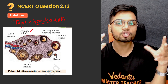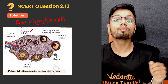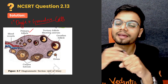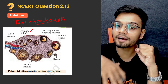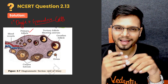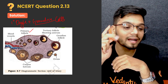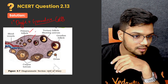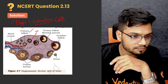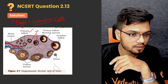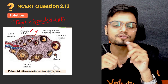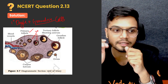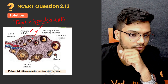Now this primary follicle starts to accumulate more layers of granulosa cells. If a primary follicle accumulates or gets covered by more granulosa cells, it transforms into a secondary follicle. This right here is a secondary follicle. In the case of the secondary follicle, you can also see the formation of a new theca.